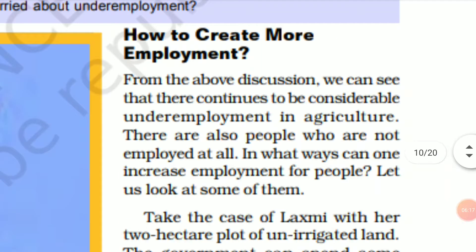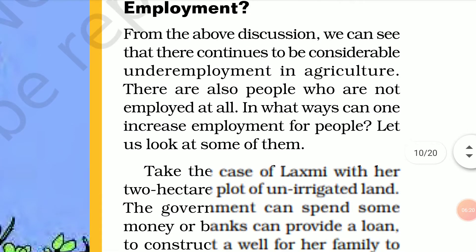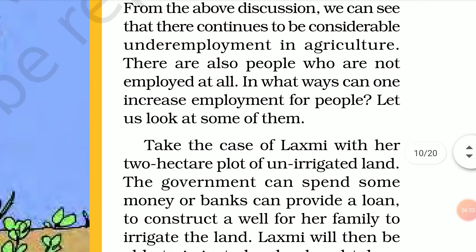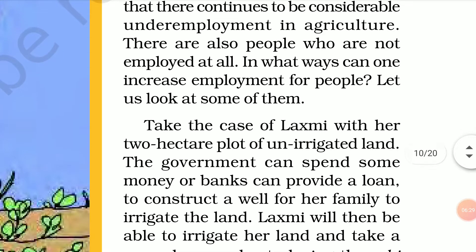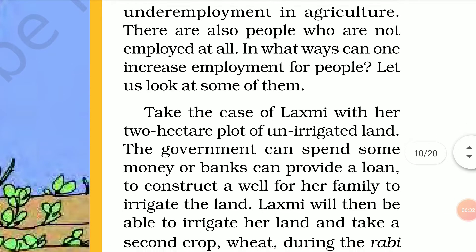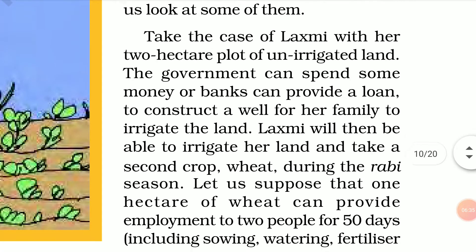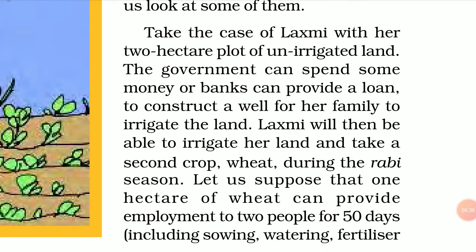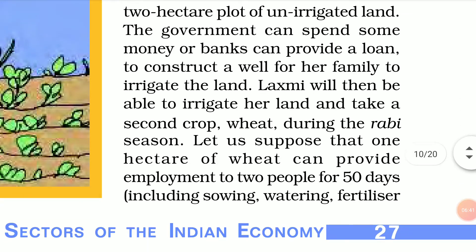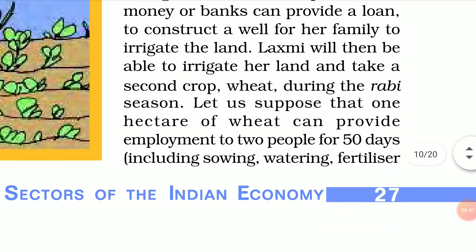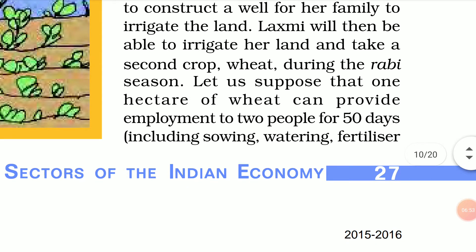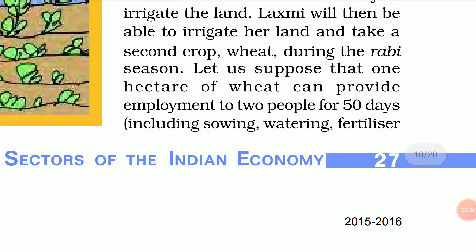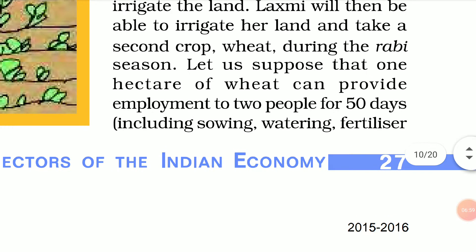How to create more employment — aur zyada employment hum kaise create kar sakte hai? We see that there continues to be disguised unemployment in agriculture, and there are also people who are not employed at all. Take the case of Lakshmi with her two hectare plot of unirrigated land. The government can spend some money, or banks can provide a loan, to construct a well for her family to irrigate the land. Lakshmi will then be able to irrigate her land and take the second crop, wheat, during the rabi season.